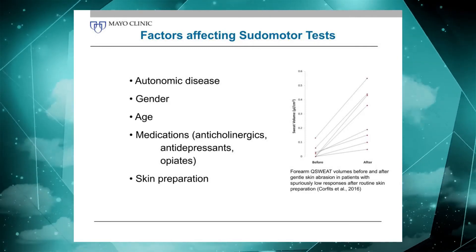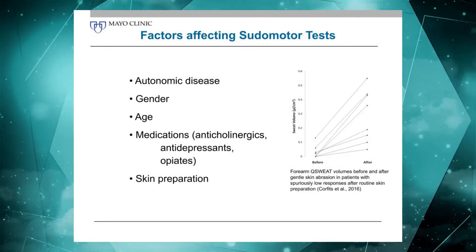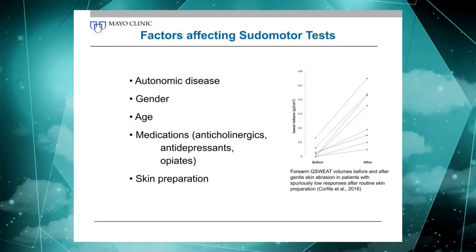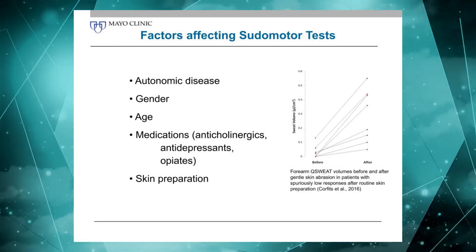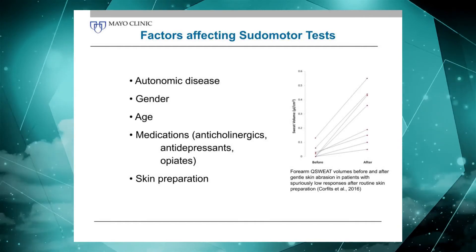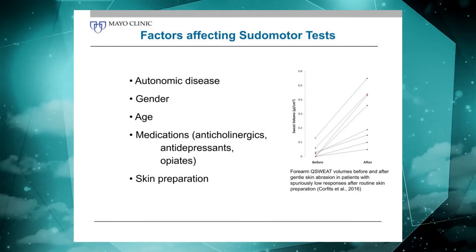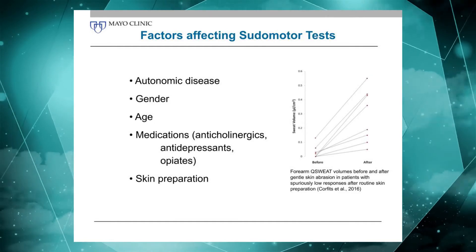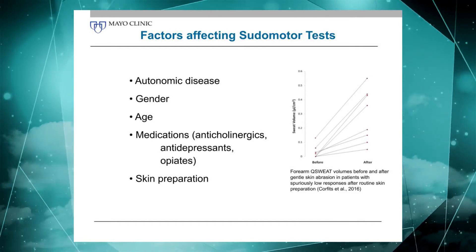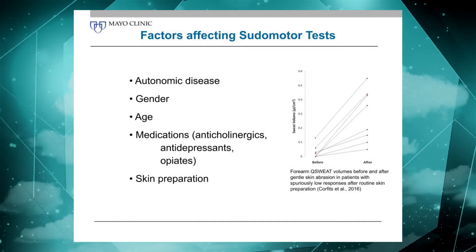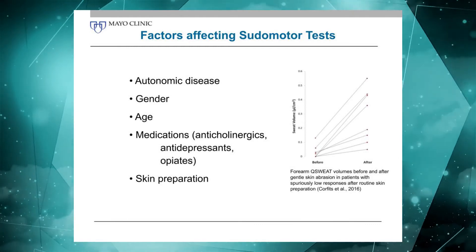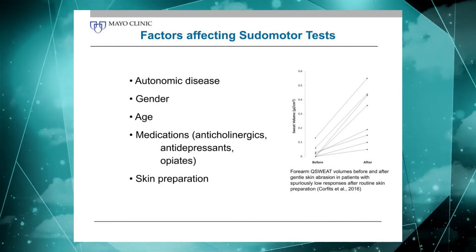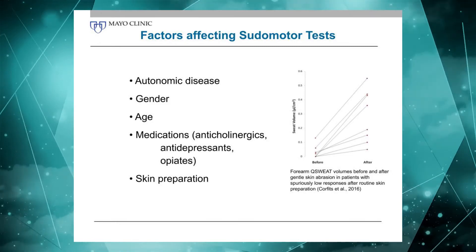On the right here, I'm showing you a little example of a recent study we did on subjects where there was a spuriously absent response. For otherwise healthy people, we wouldn't expect an absent response at the forearm. We intensified our skin preparation, and they all had a normal response. So skin preparation is really important, and we'll demonstrate that in some detail — how to obtain a good response with the right skin preparation.